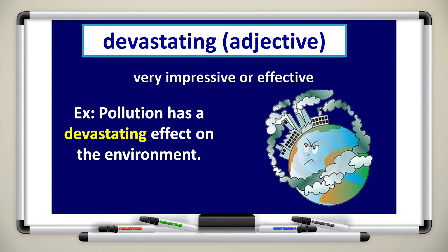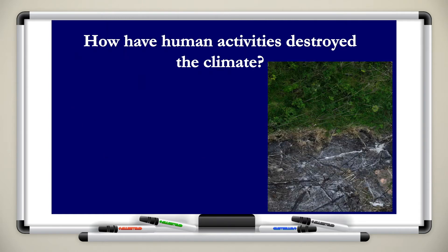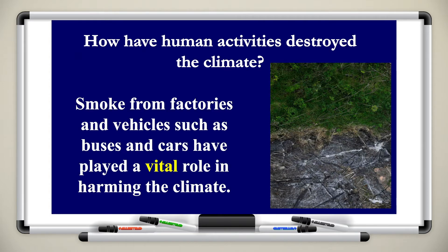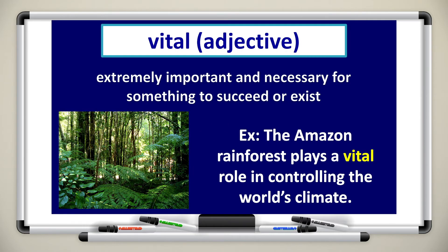How have human activities destroyed the climate? Smoke from factories and vehicles like buses and cars have played a vital role in harming the climate. 'Vital' means extremely important. For example, the Amazon rainforest plays a vital role in controlling the world's climate.